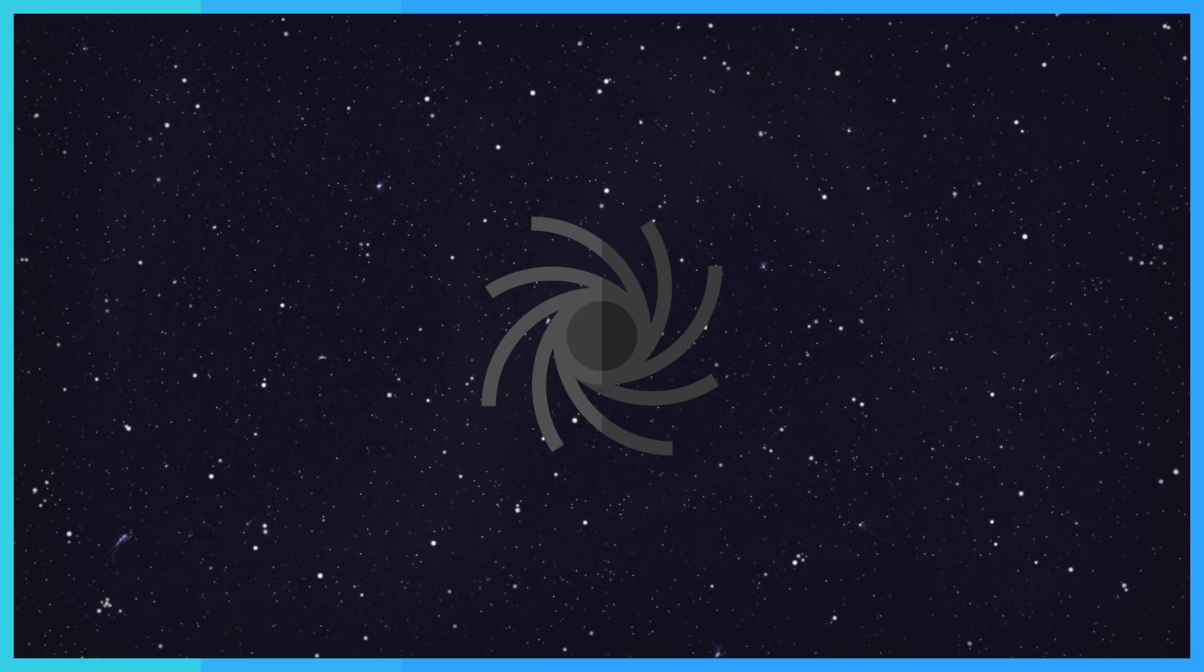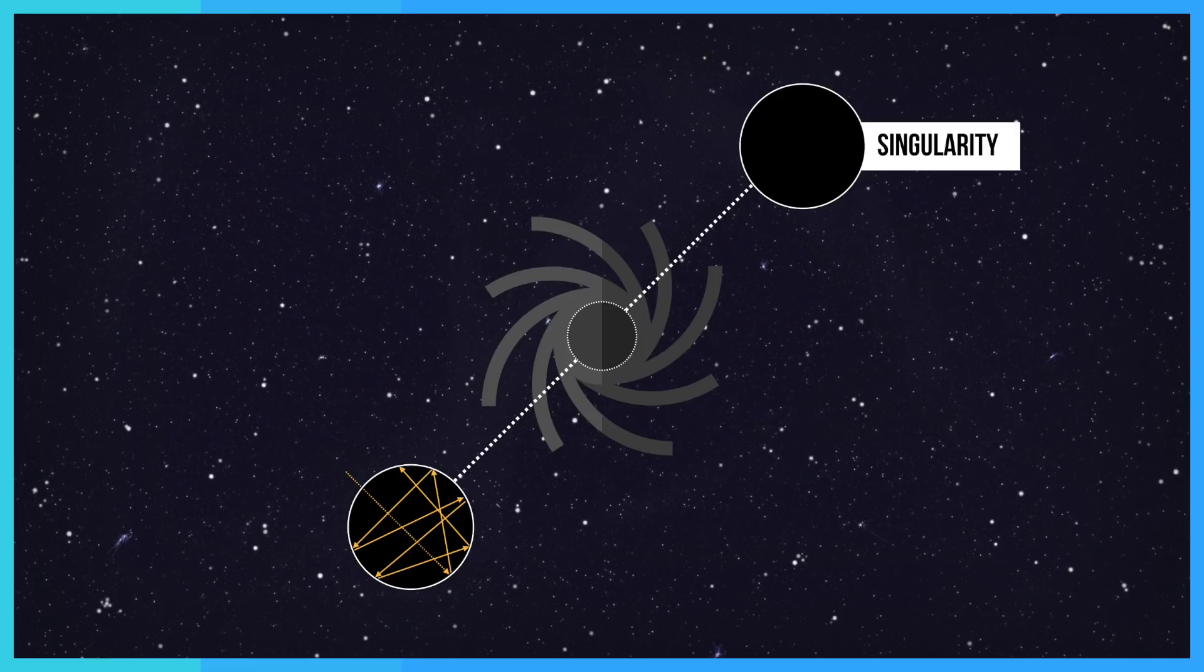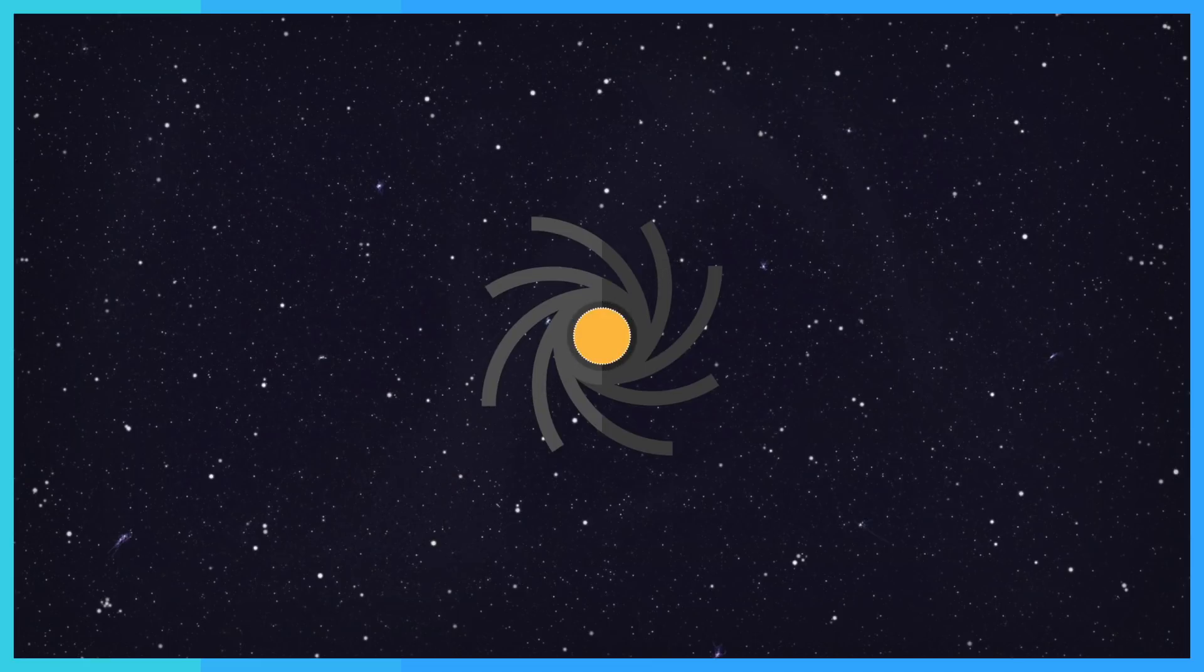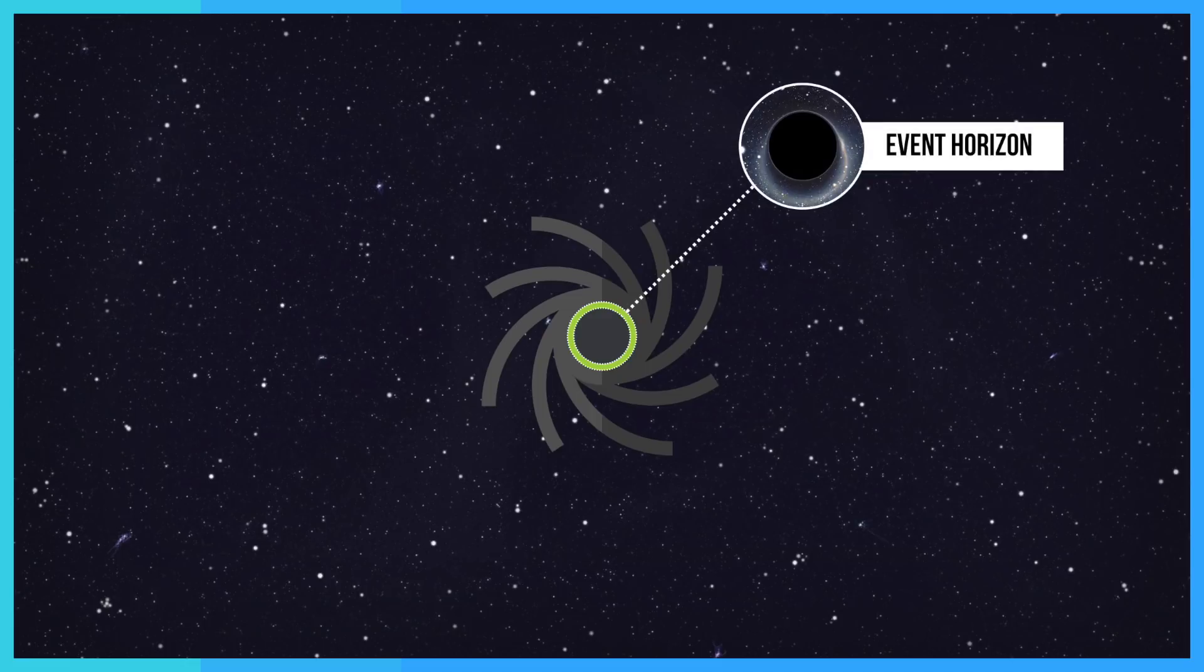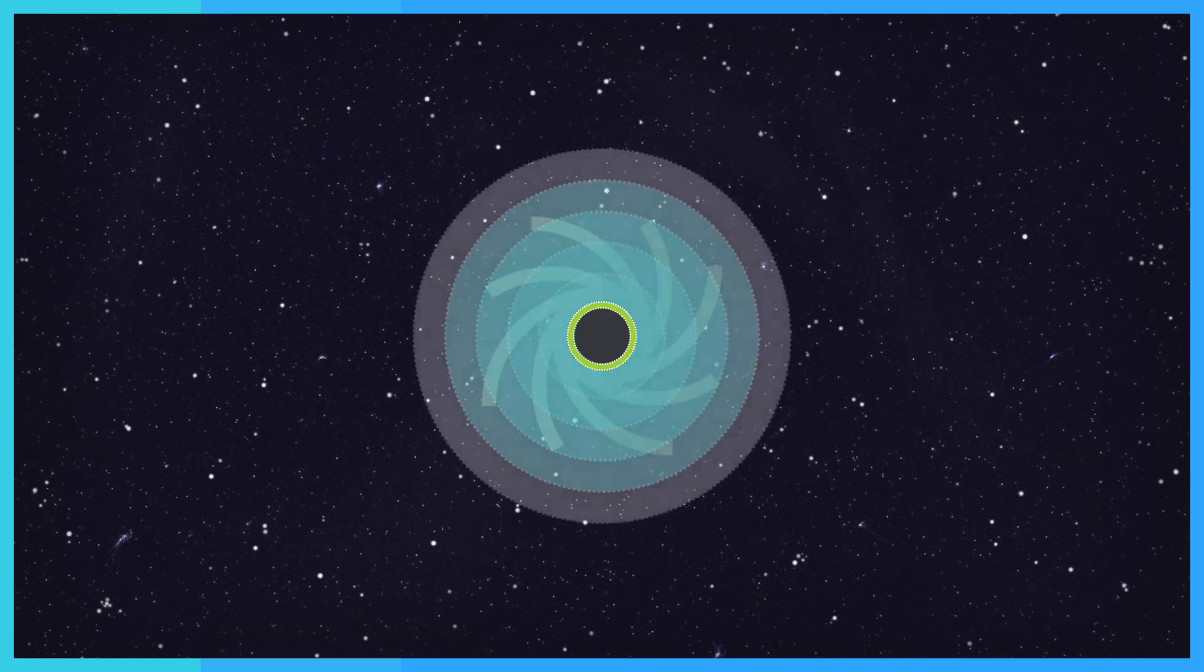At the middle of a black hole there is a gravitational center called a singularity. It is impossible to see this because the gravity prevents any light escaping. Around this tiny singularity there is a large area where light gets sucked in as well instead of normally passing by. The edge of this area is called the event horizon and the gravity of a black hole gets weaker and weaker with distance. The event horizon is the place furthest away from the middle where the gravity is still strong enough to trap light.